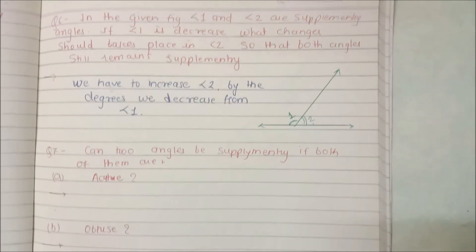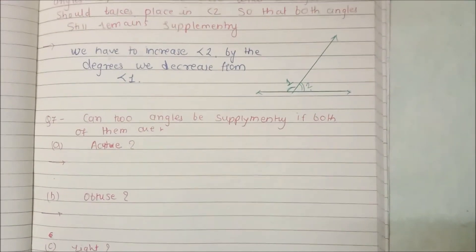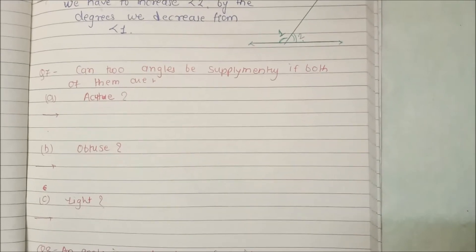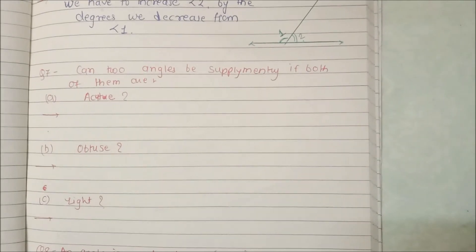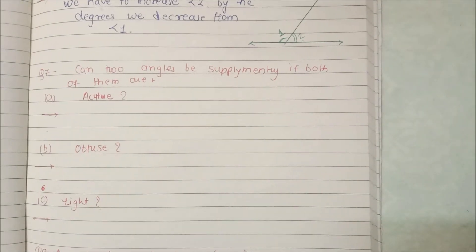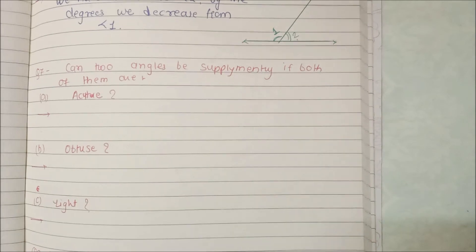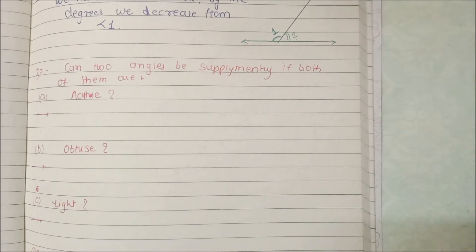Now we look at Question 7. The question asks: can two angles be supplementary if both of them are acute? Two angles are supplementary when their sum is 180 degrees. Now, if both angles are acute angles, let us examine whether this is possible.